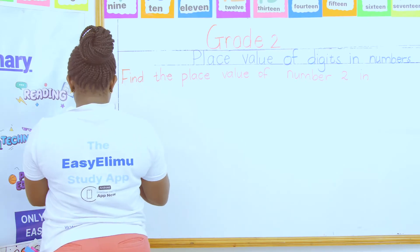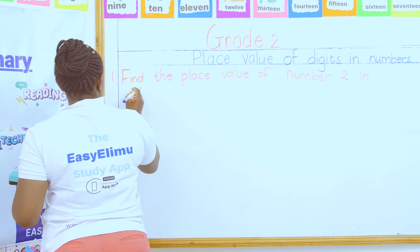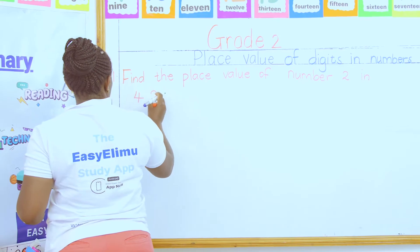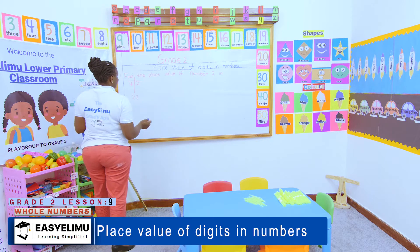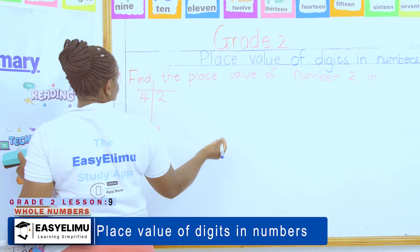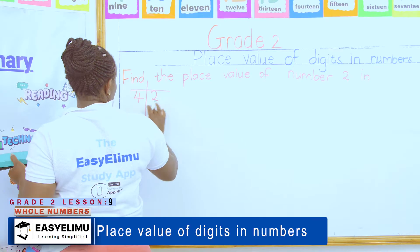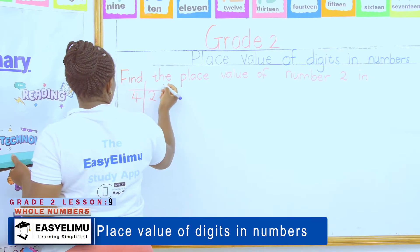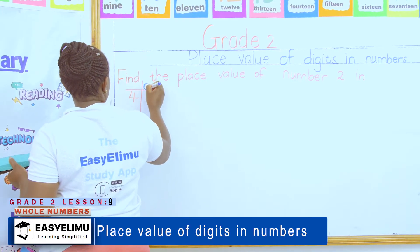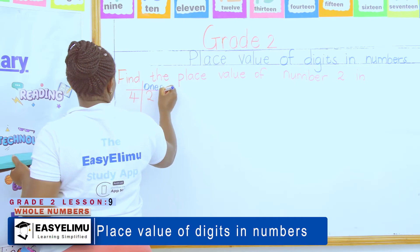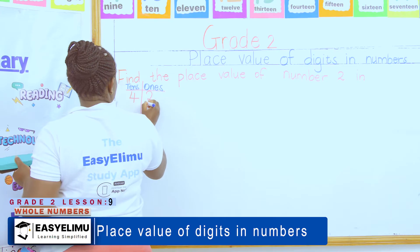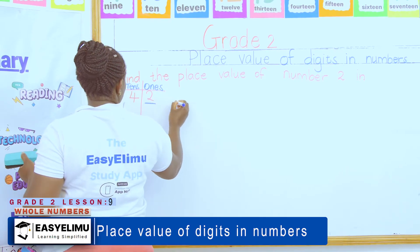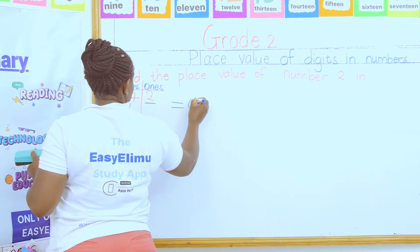I'll leave enough spacing so that you're able to see exactly what you're supposed to do. Now I've been told: find the place value of number two in that number. Two is in the ones place value. What about four? Four is in the tens place value. So when they say find the place value of number two, the place value of number two is ones.